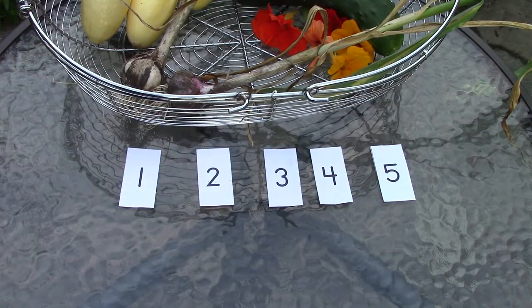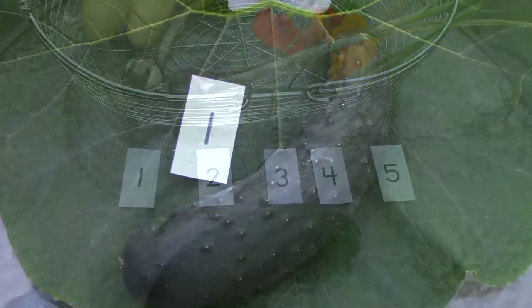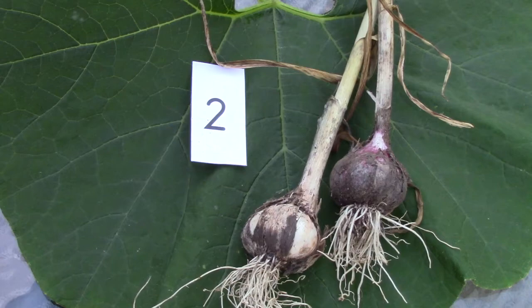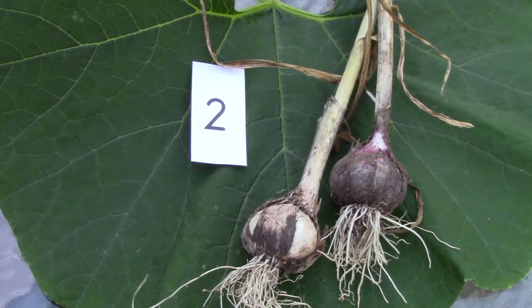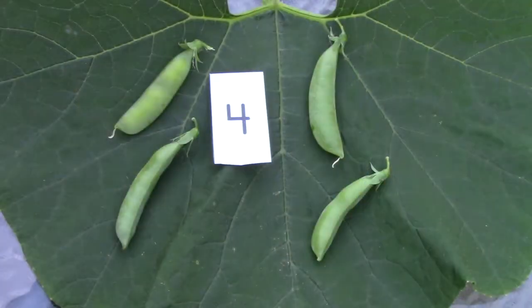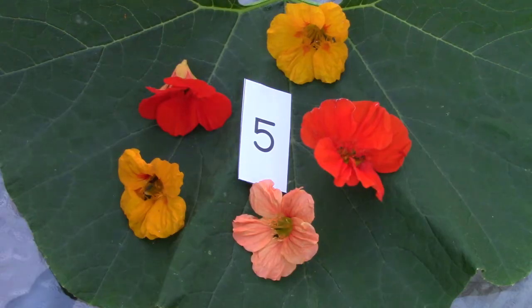I'm going to look in my basket and see what I have found. For number one, I have one cucumber. I have two bulbs of garlic. I have three summer squash. I have four pods of peas. And I have five beautiful nasturtium flowers. Did you know that you can eat these flowers?